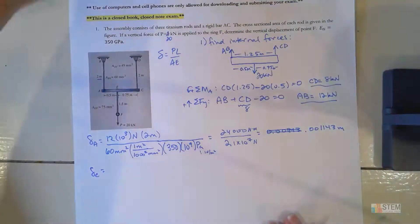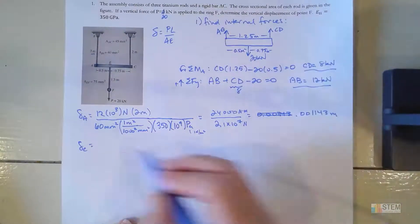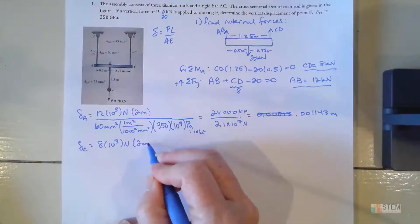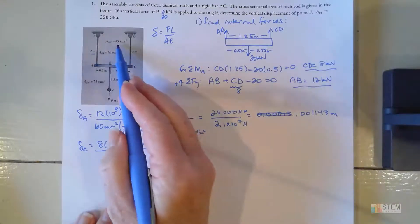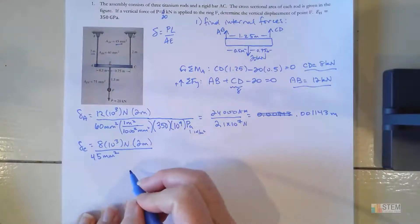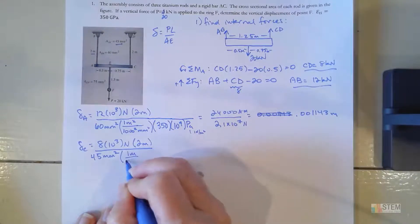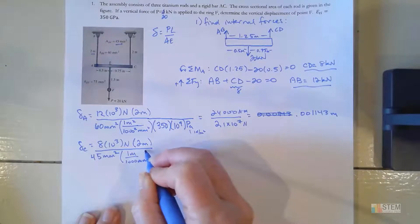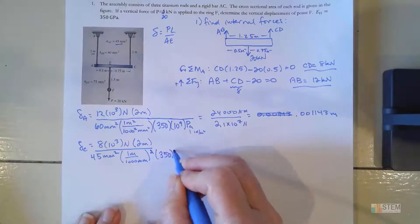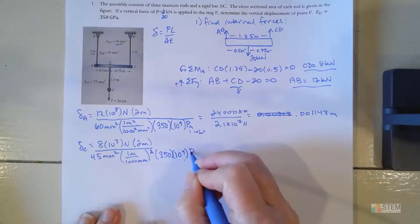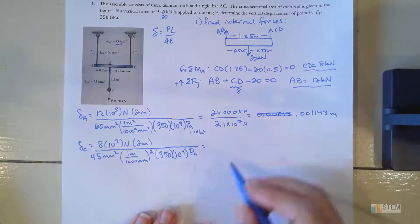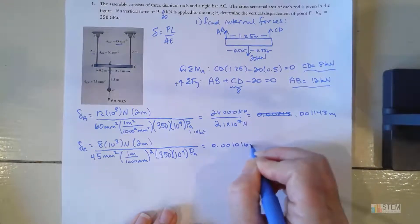Now let's do point C with the same steps but different values. The force is 8 kilonewtons, so 8 × 10³ newtons. The length is still 2 meters. The area is now 45 mm², again divided by 1000², and E remains 350 × 10⁹ pascals. Simplifying gives delta_C = 0.001016 meters.